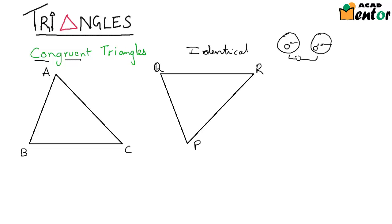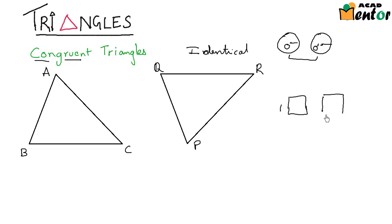I can say these two circles are congruent to each other. Or if I had a square of side 1 centimeter and another square of side 1 centimeter, I can again say that these two squares are congruent to each other because they are identical.